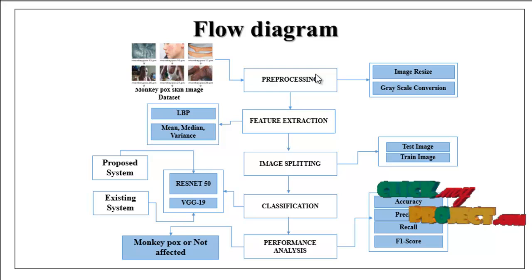The preprocessed image is carried out to feature extraction. In this step, we have implemented local binary pattern and mean median variance. With the help of these two techniques, we can extract the effective features from preprocessed image.